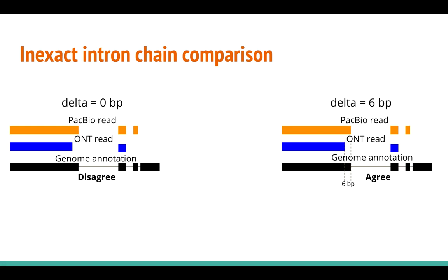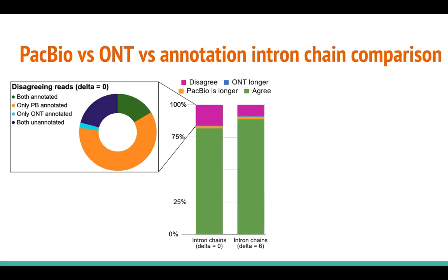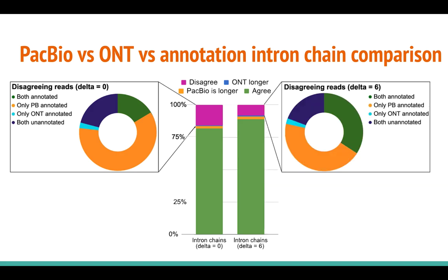Here is an example of a read pair where splice junctions differ by six nucleotides, and during inexact comparison we say that these reads agree in terms of internal chains. Inexact internal chain comparison with delta reduced disagreements between paired PacBio and ONT reads nearly in half. Among the remaining disagreements, the trend of PacBio being more consistent with the annotation is preserved. Overall, 74% of ONT and 36% of PacBio mappings inconsistent with the annotation during exact comparison were reclassified as annotated with delta equals six base pairs.